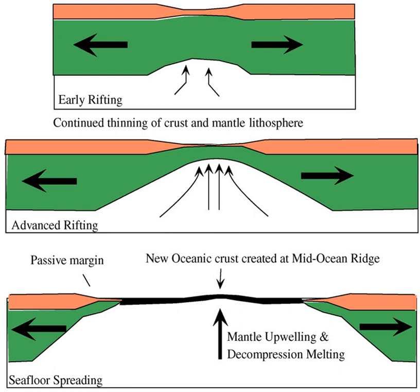Passive margins consist of both onshore coastal plain and offshore continental shelf-slope-rise triads. Coastal plains are often dominated by fluvial processes, while the continental shelf is dominated by deltaic and longshore current processes. The great rivers — Amazon, Orinoco, Congo, Nile, Ganges, Yellow, Yangtze, and Mackenzie rivers — drain across passive margins.